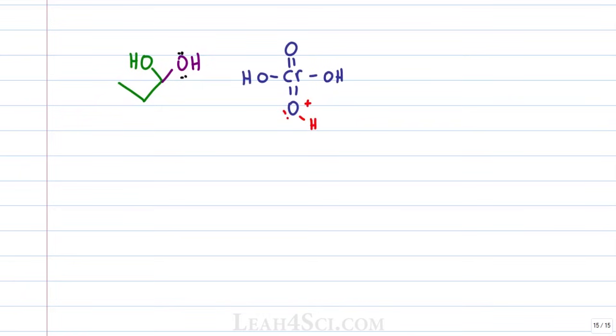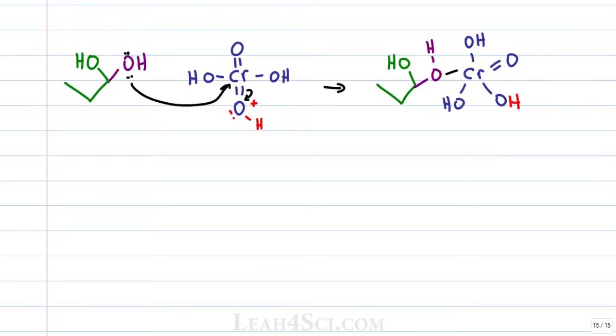Once again, we see the lone pair and alcohol attack an activated chromic acid breaking the bond between chromium and the activated oxygen. The purple oxygen now has three bonds, a lone pair and a positive charge so we show an internal proton transfer to make the oxygen neutral. Once again, we have a chromate ester ready for the oxidation step.